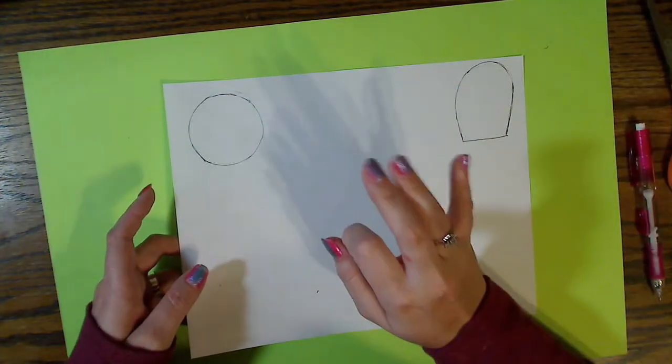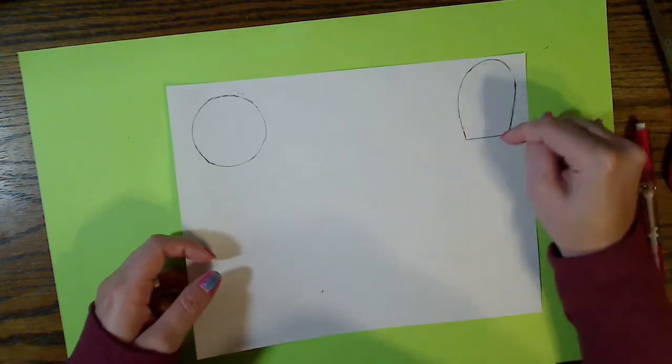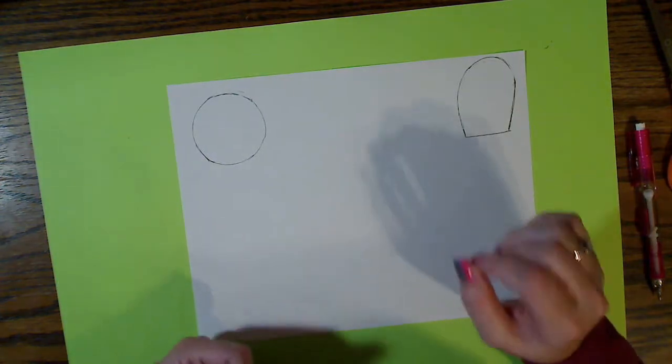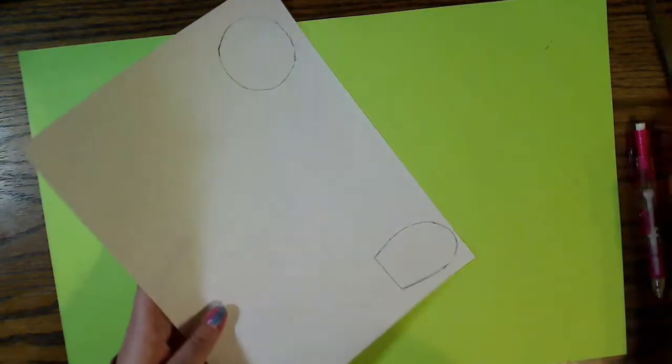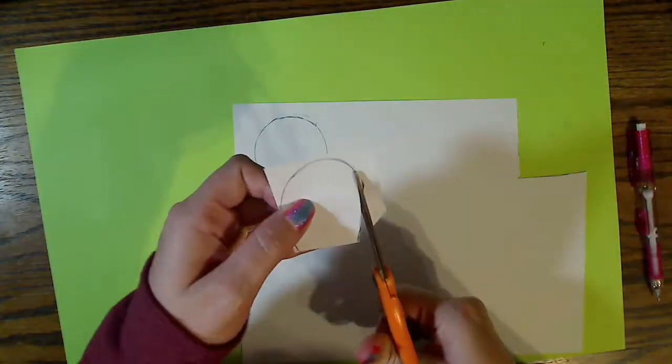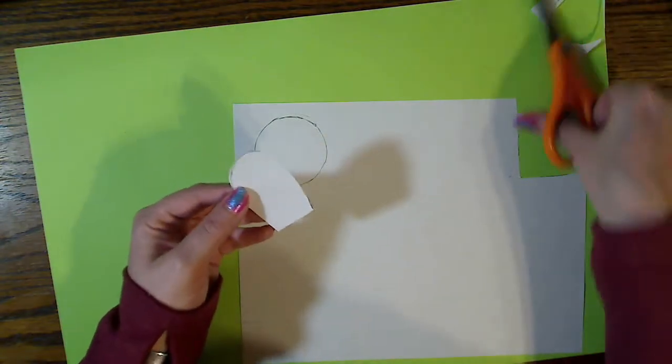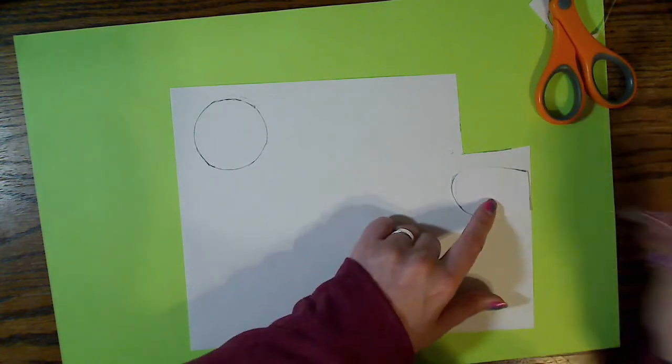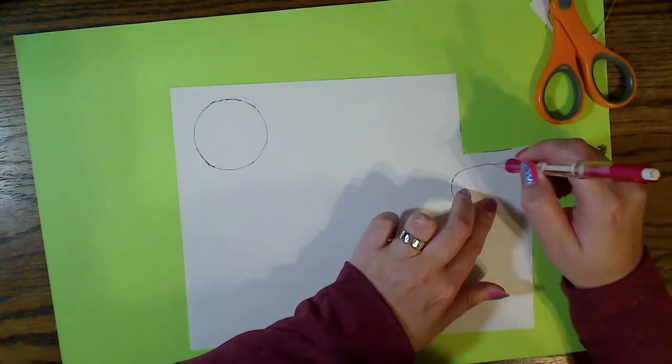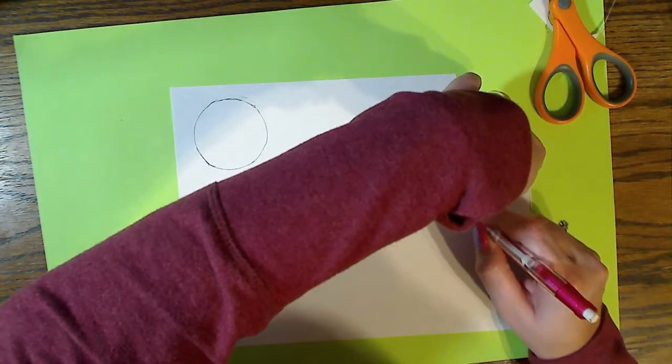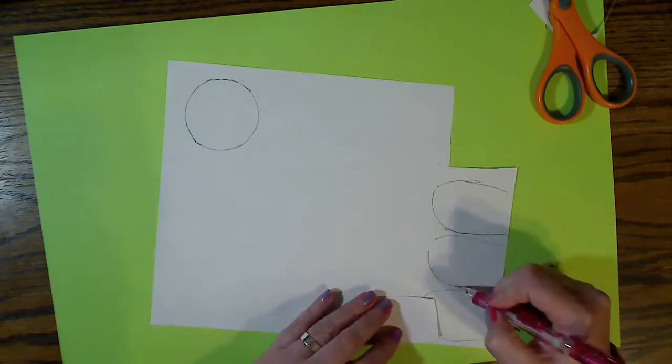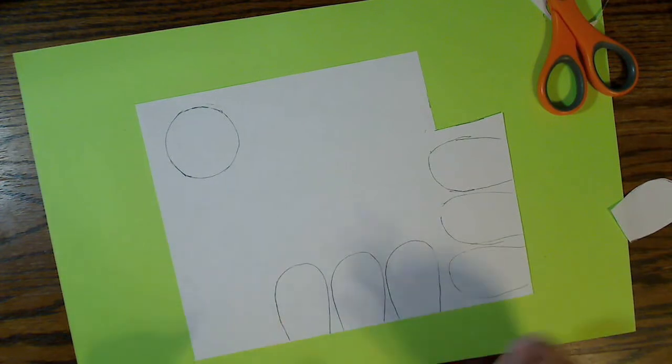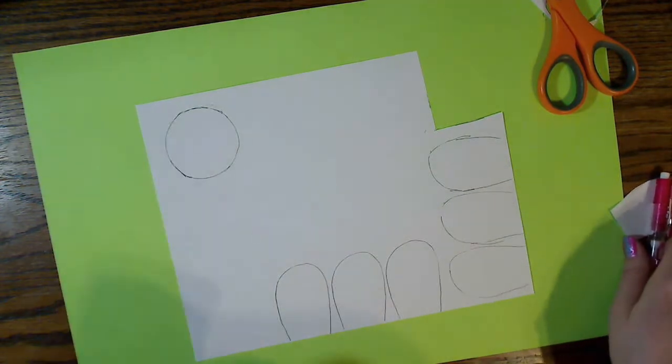Now, what I'm going to do is a little art teacher hack. I'm going to cut this petal out, and then I'm going to trace it several more times so that all my petals are exactly the same size. Okay. Now that I have that cut, I'm going to use the edge of my paper. I'm going to trace my flower petal. There we go. I have traced my flower petal six times, and I have my center circle.